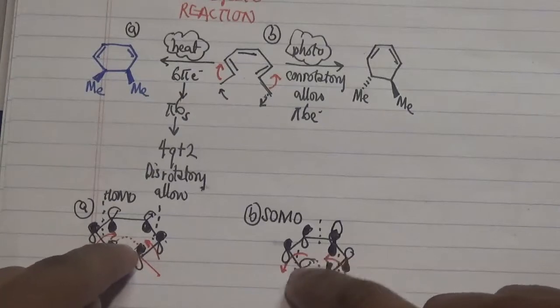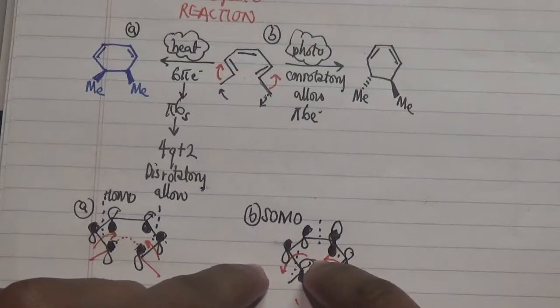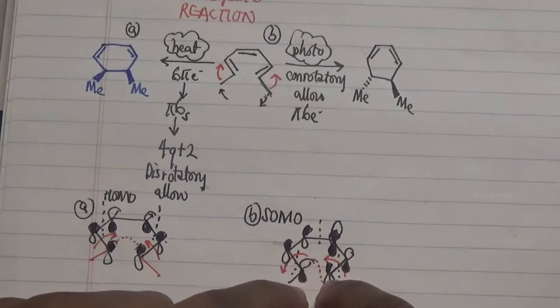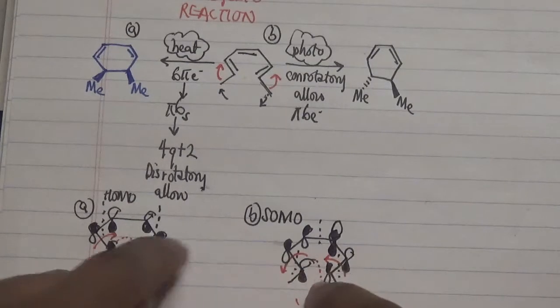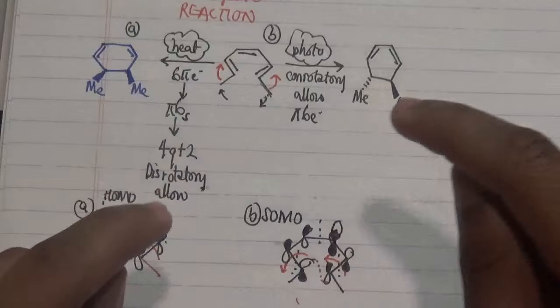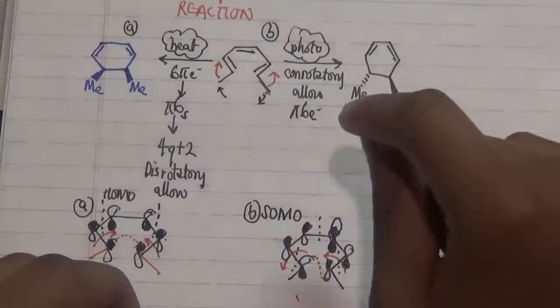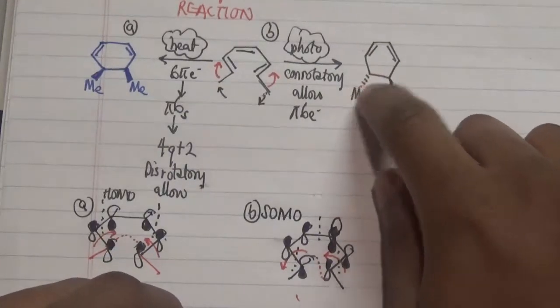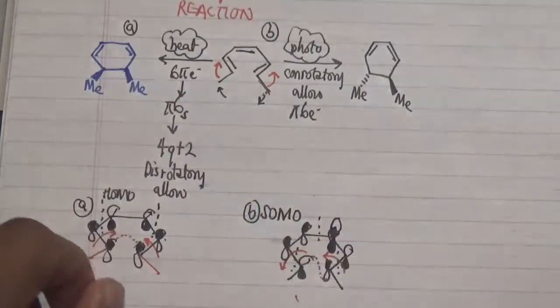So you're going three nodes now compared to just two nodes, and you have a conrotatory process in order for these two orbitals here, the tail and the head, to overlap to form our sigma bond. We also took into account the stereochemistry in terms of one being trans and the other being cis with respect to each other.